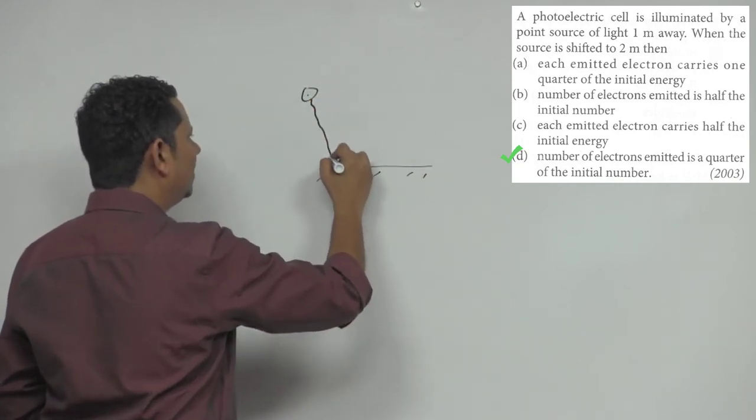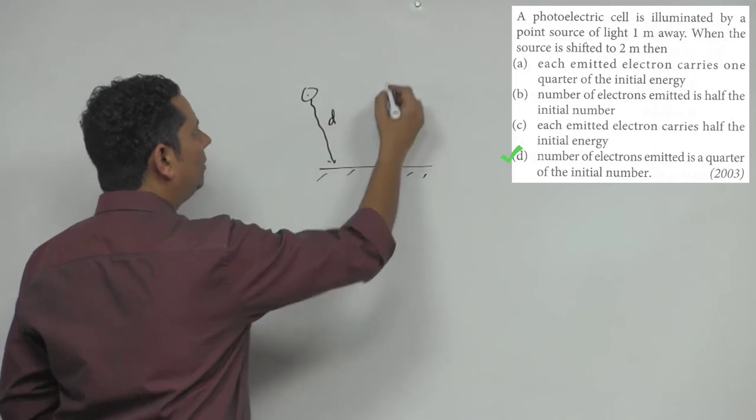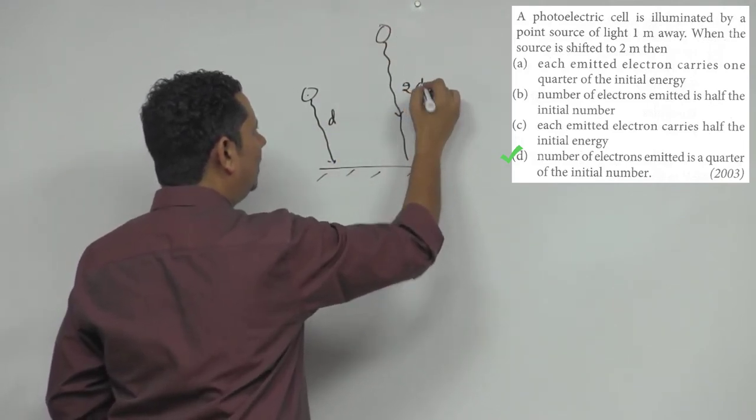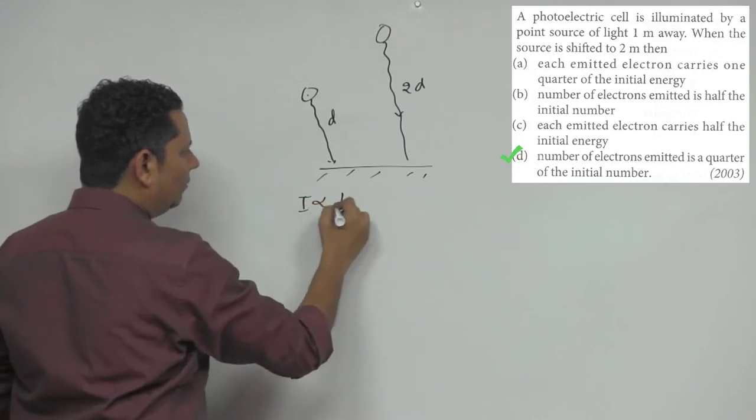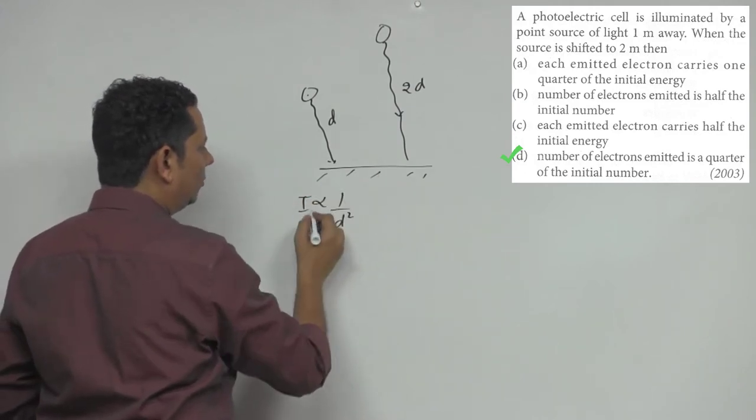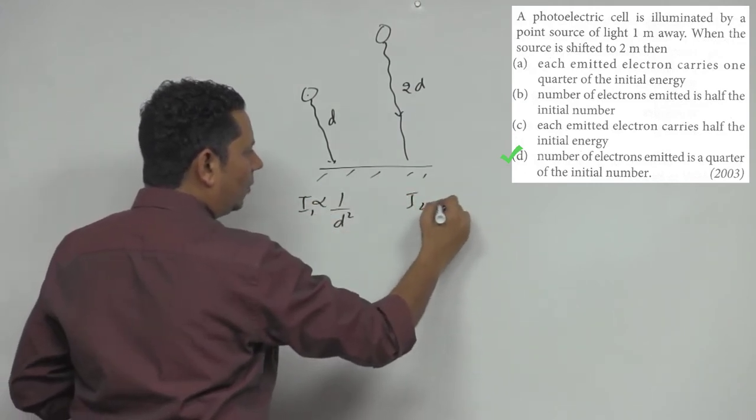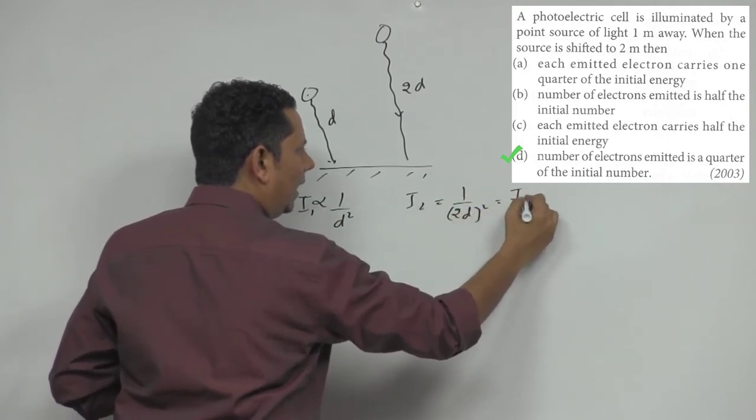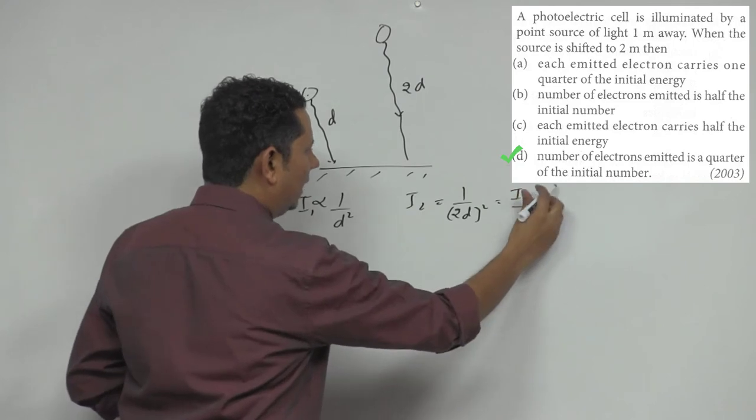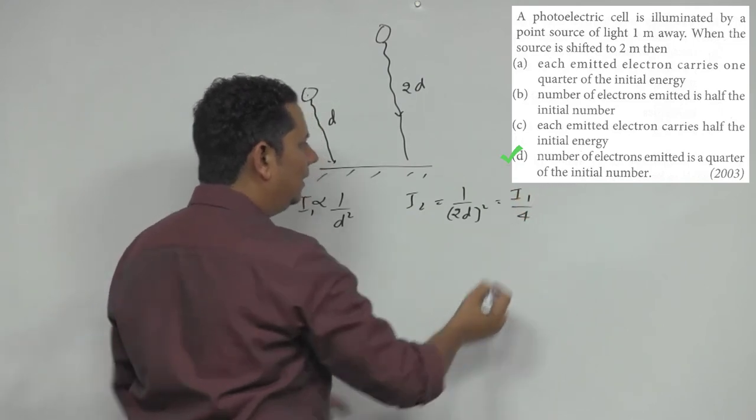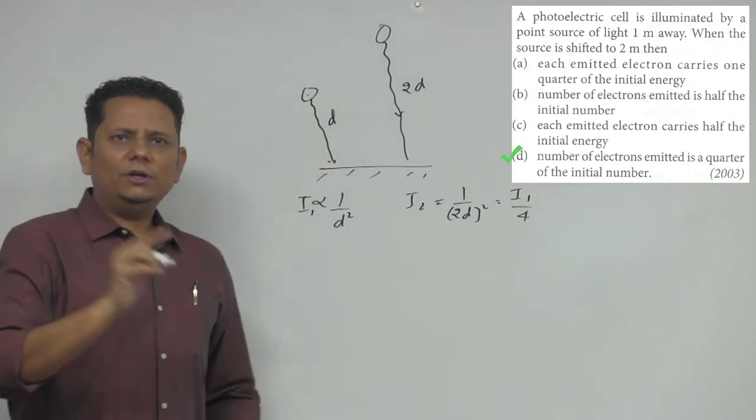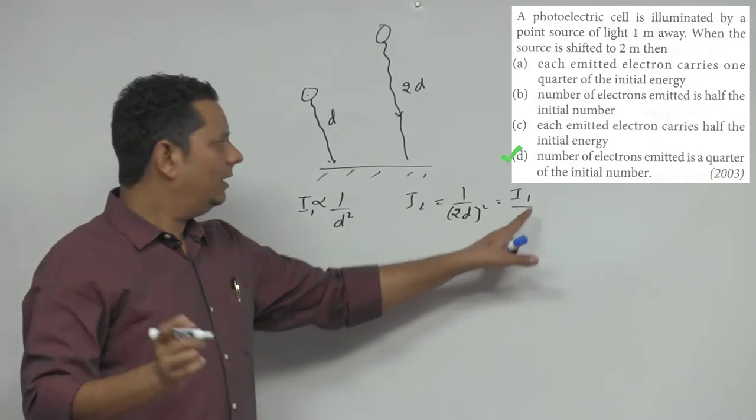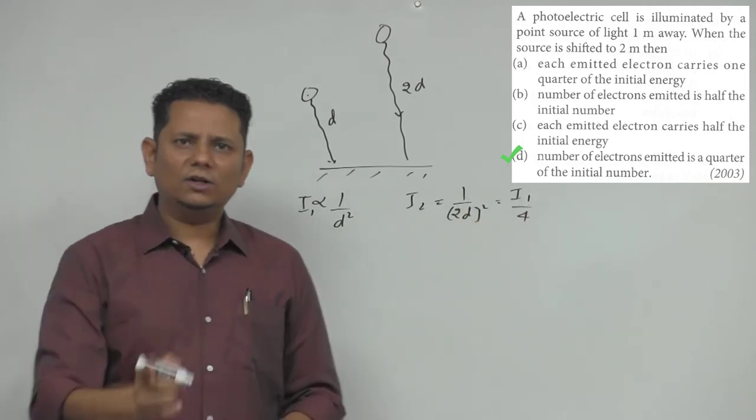From the point source, you have to pay attention to the relationship with d squared - the intensity is proportional to 1 over d squared.